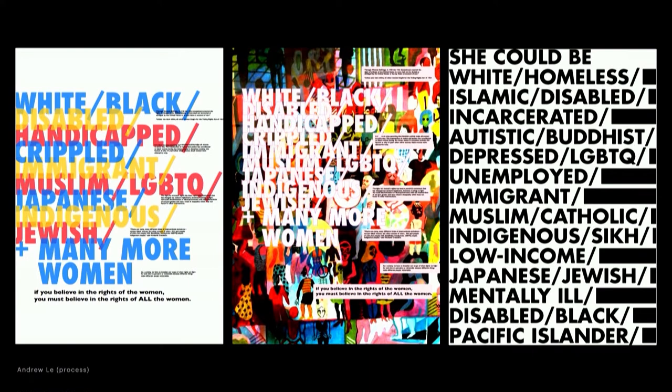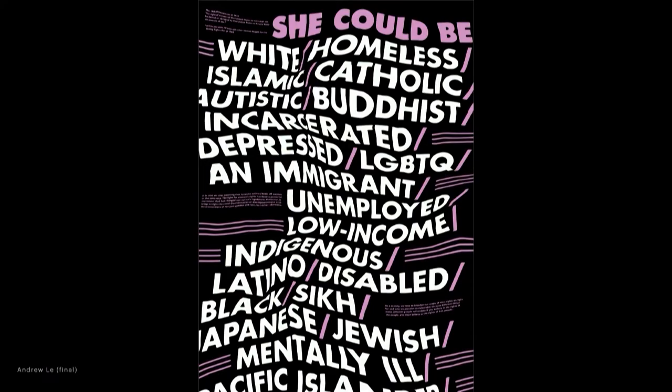Then we have debates about how much text you want on a poster, and are people actually going to come up and read all of this? I was pushing him on how can you make type do the work, because he's trying to get across the idea that no matter what group you're part of — whether handicapped, LGBT, a woman, whatever race you are — you all have the right to vote. Rather than trying to find one image that ends up being clichéd, he started to play with words. His final solution was quite strong in terms of engaging people from various distances and letting type do the work.